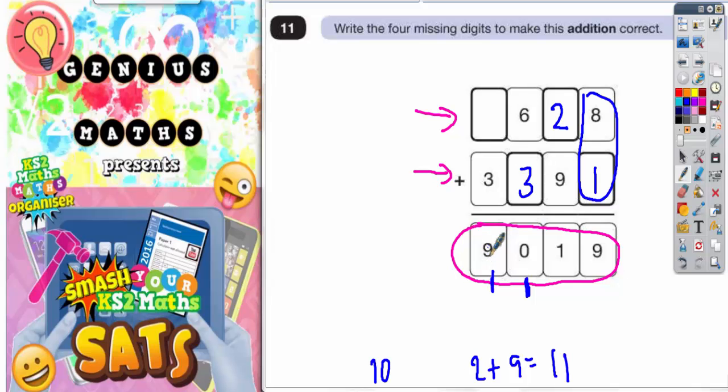Now we're trying to make 9. So 3 plus the 1 I've carried is 4. And we need to make 9. So you're going to need another 5. So it looks like it's going to be 5.